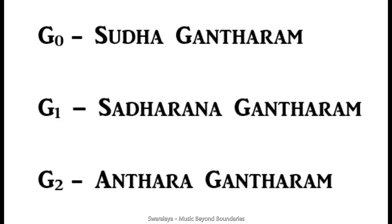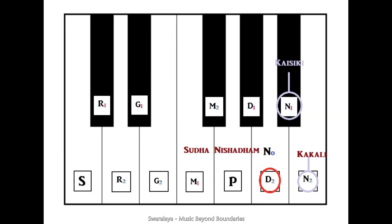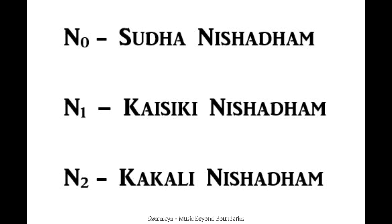The same pattern is followed for Nishadam. Nishadam takes its Vivadi from Da. We know Ni 1 is Kaisiki Nishadam and Ni 2 is Kaakali Nishadam. The previous note, Chattu Shruti Daivatham, is given another name: Shuddha Nishadam, or Ni 0. So Ni 0 is Shuddha Nishadam, Ni 1 is Kaisiki Nishadam, and Ni 2 is Kaakali Nishadam, in order of increasing frequency.